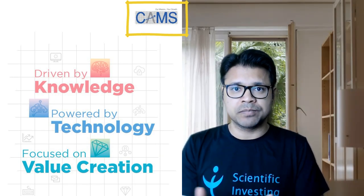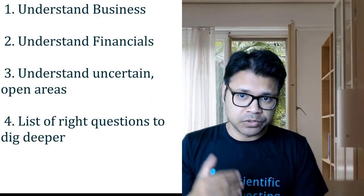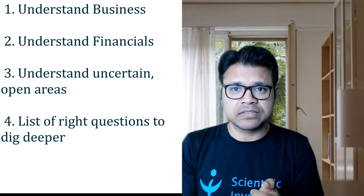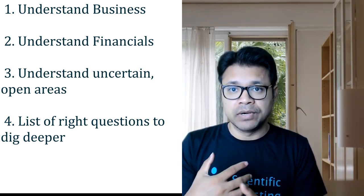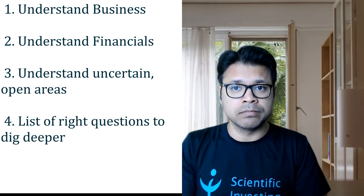From our last video on how to read annual reports, we highlighted that we should break annual reports into key sections: the letter/communication from management, the management discussion and analysis section, the business snapshot section, the financial statements, the auditor reports, notes and schedules, and disclosures. We will go through each of these for CAMS. First, we'll try to understand the business. Second, we'll identify open areas with uncertainty. Third, we'll identify key questions to seek answers to — perhaps through phone calls — to build a better understanding.